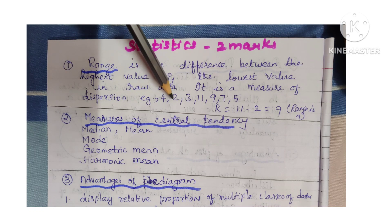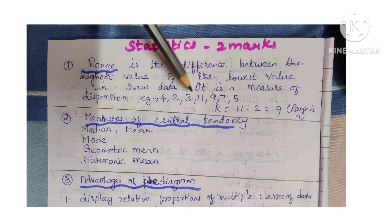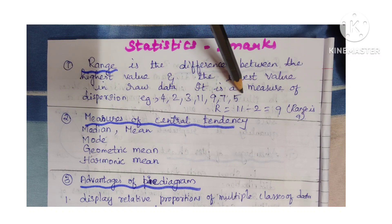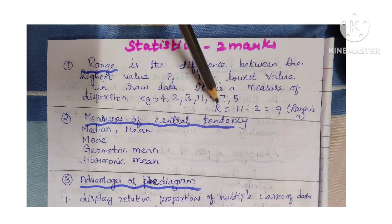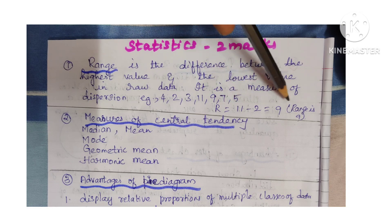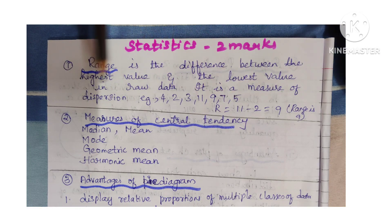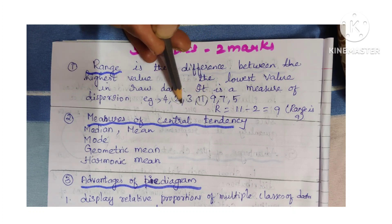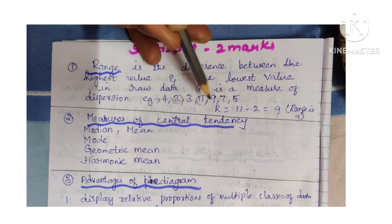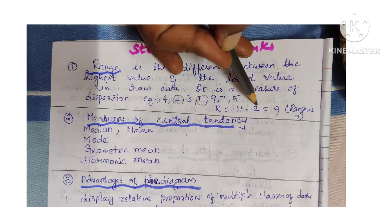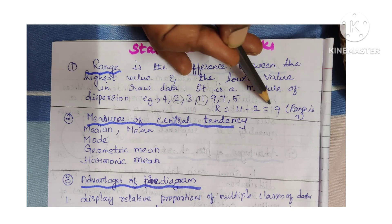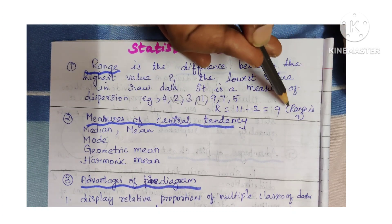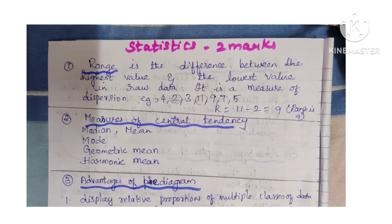In the given set of data — 4, 2, 3, 11, 9, 7, 5 — range is equal to 11 minus 2, where 11 is the uppermost value and 2 is the lowermost value. Highest value minus lowest value equals range. So, 9 is the range.